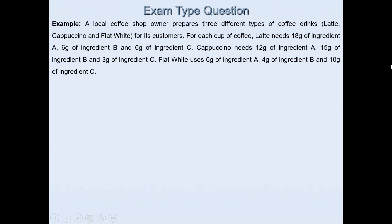In this question it says a local coffee shop owner prepares three different types of coffee drinks: latte, cappuccino, and flat white for its customers. For each cup of coffee, latte needs 18 grams of ingredient A, 6 grams of ingredient B, and 6 grams of ingredient C. Cappuccino needs 12 grams of ingredient A, 15 grams of ingredient B, and 3 grams of ingredient C. Flat white uses 6 grams of ingredient A, 4 grams of ingredient B, and 10 grams of ingredient C.